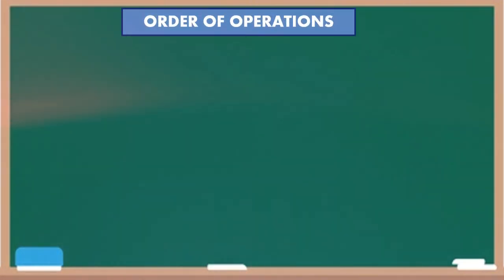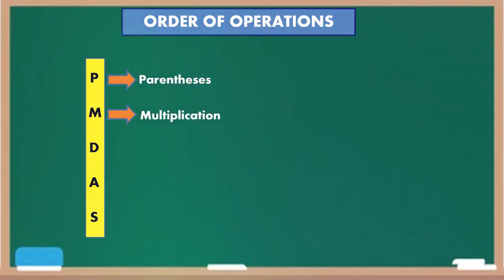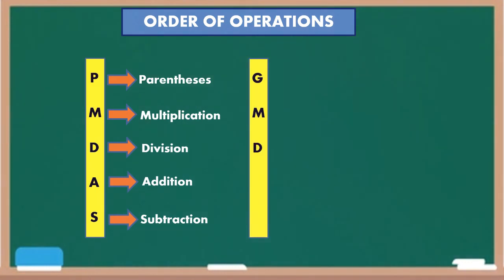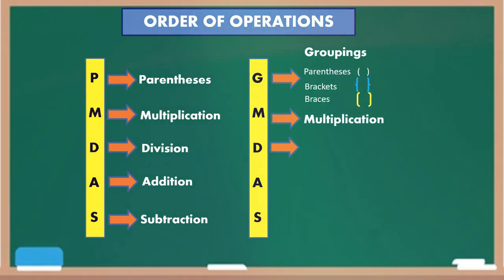Here are the order of operations that we will use. PEMDAS is an acronym that stands for Parenthesis, Exponents, Multiplication, Division, Addition, and Subtraction. While GMDAS stands for Groupings, which include Parenthesis, Brackets, and Braces, Multiplication, Division, Addition, and Subtraction.